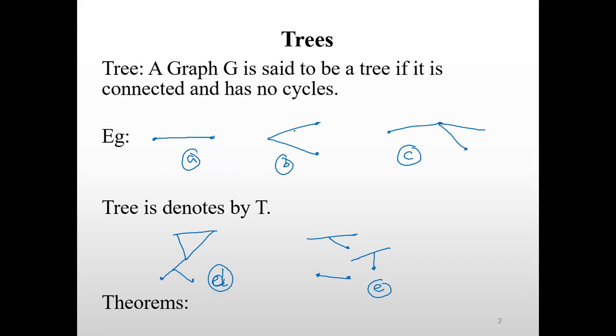Next, the second graph is also a tree, because here this graph is also a connected graph and also has no cycle. And the third is the same thing, which is connected and has no cycle.